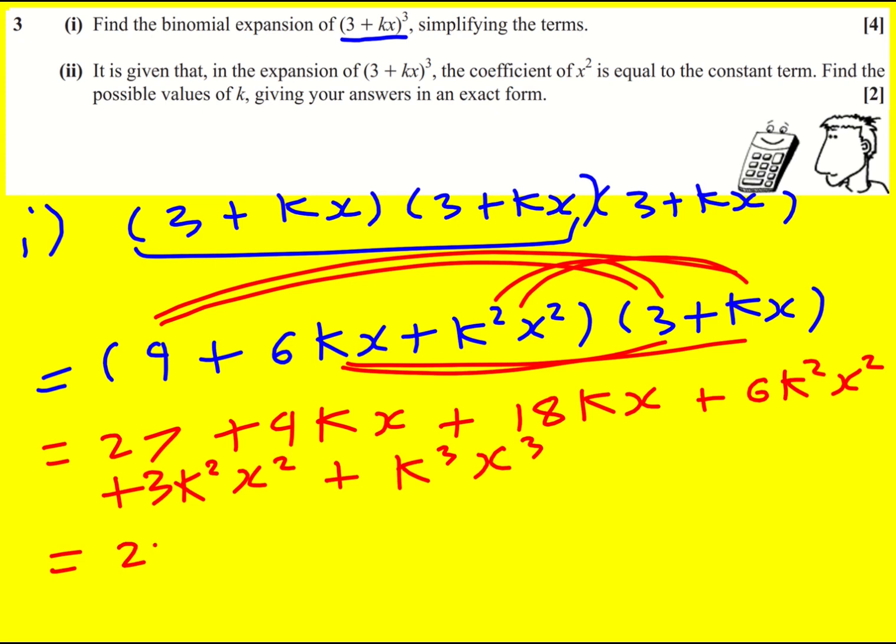Bring it together: 27 plus 27kx by adding the second and third term, plus 9k squared x squared, plus k cubed x cubed.